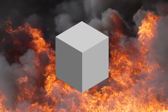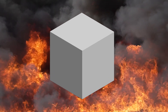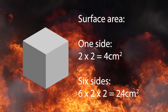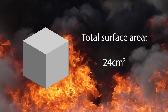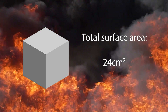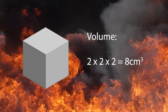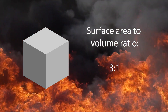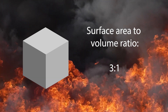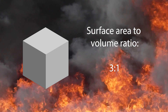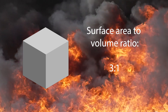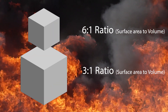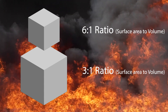This becomes relevant when we change the size of the box. Moving to a 2cm cube and going through the same process, the total surface area works out to 24cm squared and the volume works out to 8cm cubed. This gives us a 3 to 1 ratio — 3cm of surface area to 1cm cubed of volume. You can see this changes significantly depending on the size of the cube, with a smaller cube having a much greater ratio of surface area to volume than a larger cube.